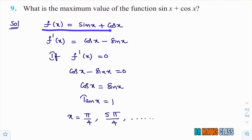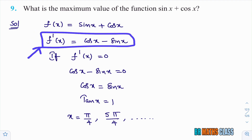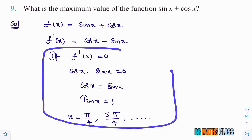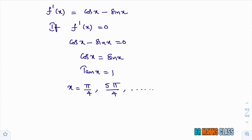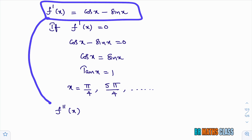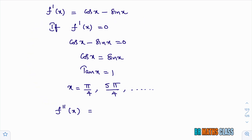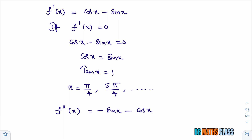So what happened so far: I took the given function as f of x, calculated f dash of x, equated it to 0 and got the critical points. Now we'll calculate f double dash of x by differentiating f dash of x. Derivative of cos x is minus sin x, and derivative of sin x is cos x. So f double dash of x equals minus sin x minus cos x. After calculating f double dash of x, you need to evaluate it at the critical points, such as f double dash of pi by 4.